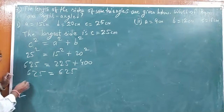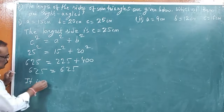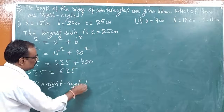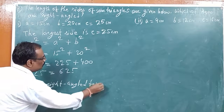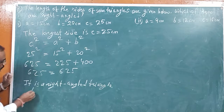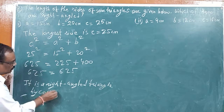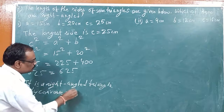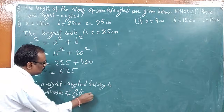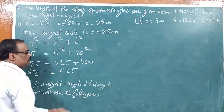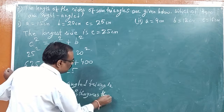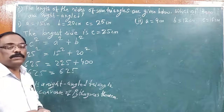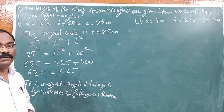So we have proved that the first portion, where C square equals A square plus B square, confirms it is a right angle triangle.